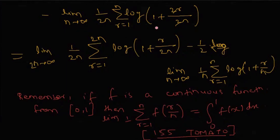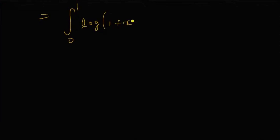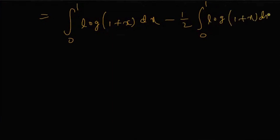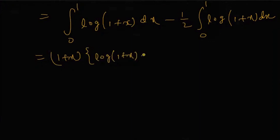Continuing, this will be the integral from 0 to 1 of log(1 + x) dx minus half times the integral from 0 to 1 of log(1 + x) dx. This equals [(1 + x)log(1 + x) − x] evaluated from 0 to 1.